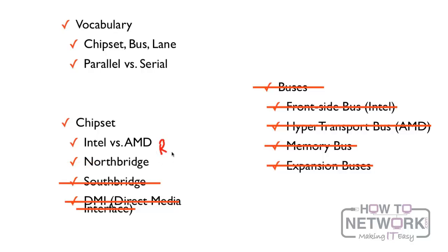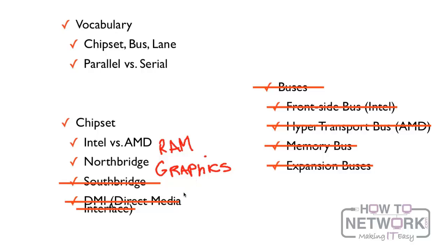Intel and AMD. The North Bridge allows the communication of RAM — random access memory — and high-speed graphics. You don't have to remember every single thing the South Bridge does; all you have to remember is that the North Bridge is responsible for RAM and graphics, and then you know exactly what both bridges control.